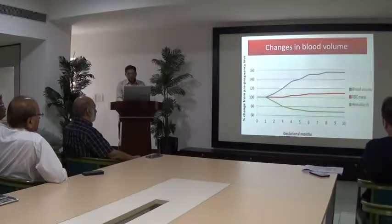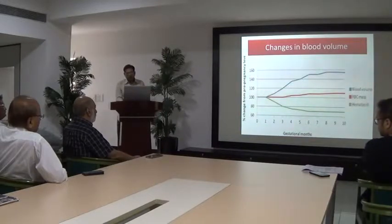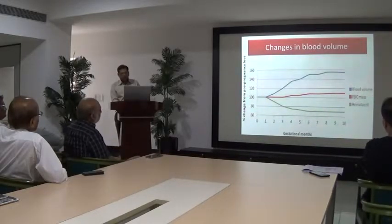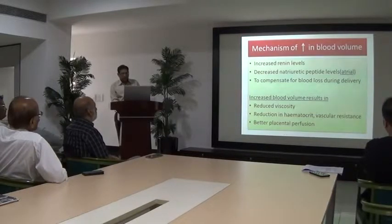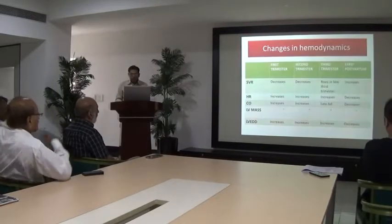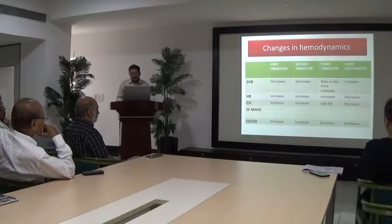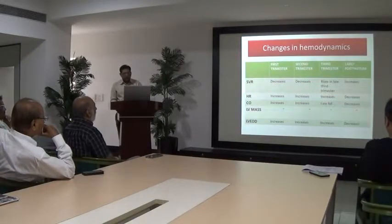The same chart shows increasing blood volume and RBC mass, but the hematocrit decreases. Because blood volume increases but the RBC mass does not increase proportionally, hematocrit actually decreases. Cardiac output increases during pregnancy, decreases during the late third trimester, and also decreases in the postpartum period. LV mass shows a similar pattern — LV end-diastolic dimension increases throughout pregnancy and decreases in the early postpartum period.